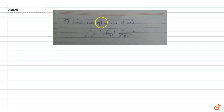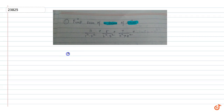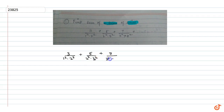In this question, we have to find the sum of n terms of the series. The series given is 3 upon 1 square into 2 square, plus 5 upon 2 square into 3 square, plus 7 upon 3 square into 4 square, and so on.